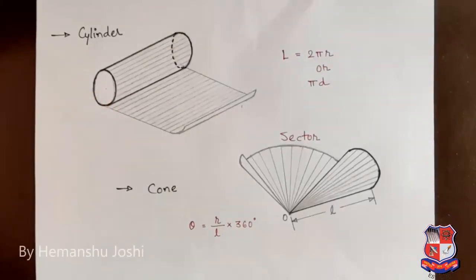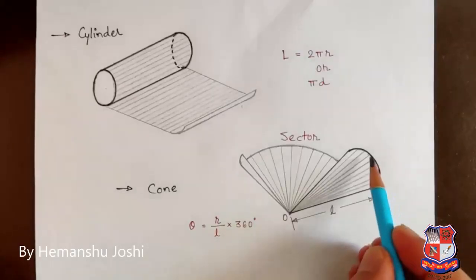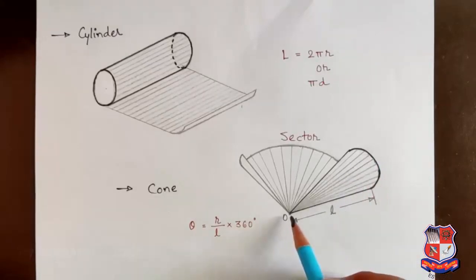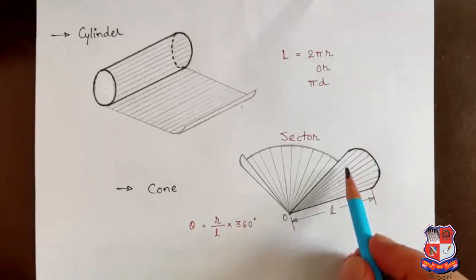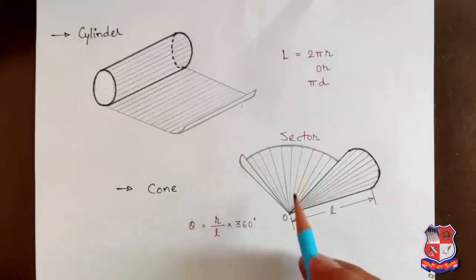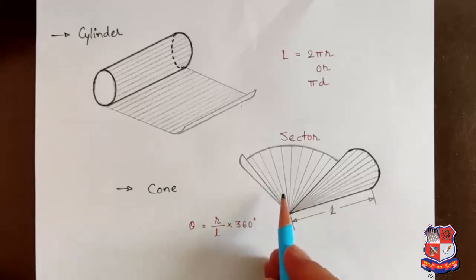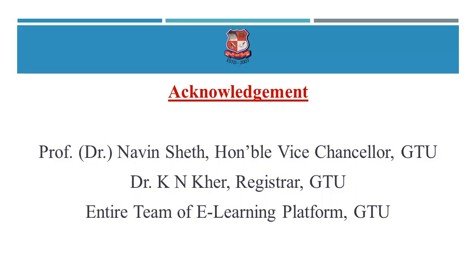Our next object is a cone. We know that cone's base is circular with one apex point. If we develop this cone, we will develop a shape called a sector. The sector's angle can be found by the equation θ equals r by L into 360 degrees, where r is the cone base radius and L is the slant length.